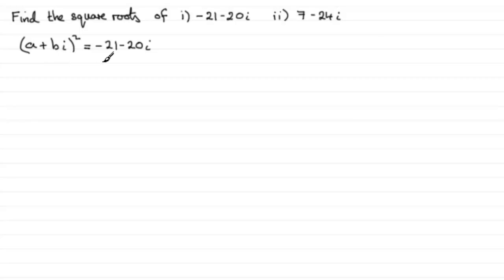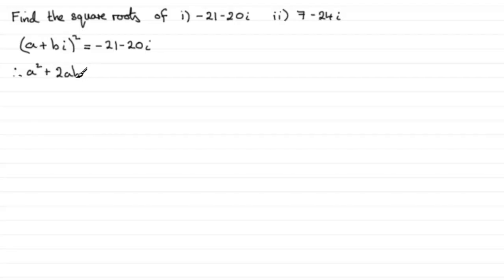If we expand the bracket we get a squared for the first term, then twice the product of the two terms which is plus 2abi, and then we square the last term to get b squared i squared. Since i squared equals minus 1, that becomes minus b squared, and that's all equal to minus 21 minus 20i.